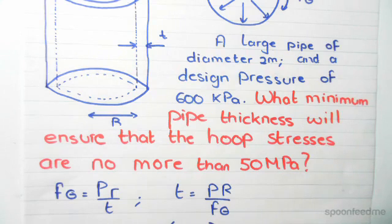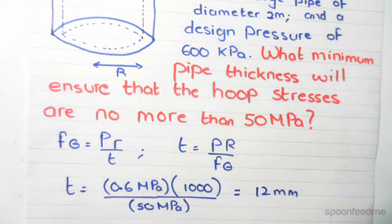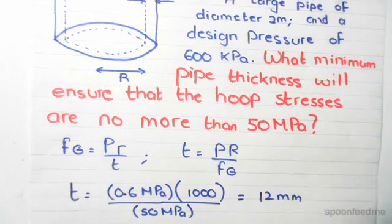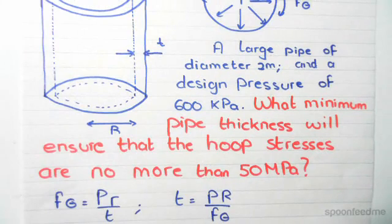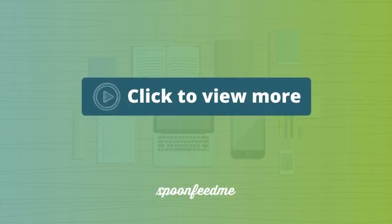So we do 0.6 times 1000, where 1000 is the radius of the pipe. The diameter is 2 meters, therefore the radius is 1 meter, which is 1000 millimeters. So it's 0.6 times 1000 divided by 50.